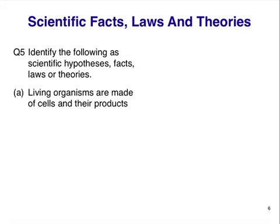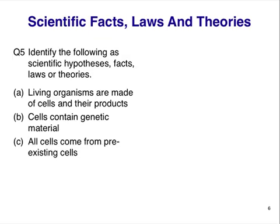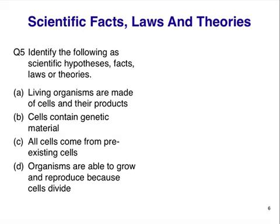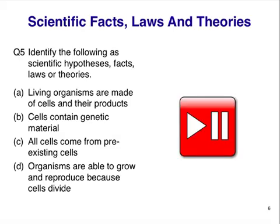Living organisms are made of cells and their products — fact, hypothesis, law, or theory? Cells contain genetic material. All cells come from pre-existing cells. Organisms are able to grow and reproduce because cells divide. Stop the video here and formulate your answers.